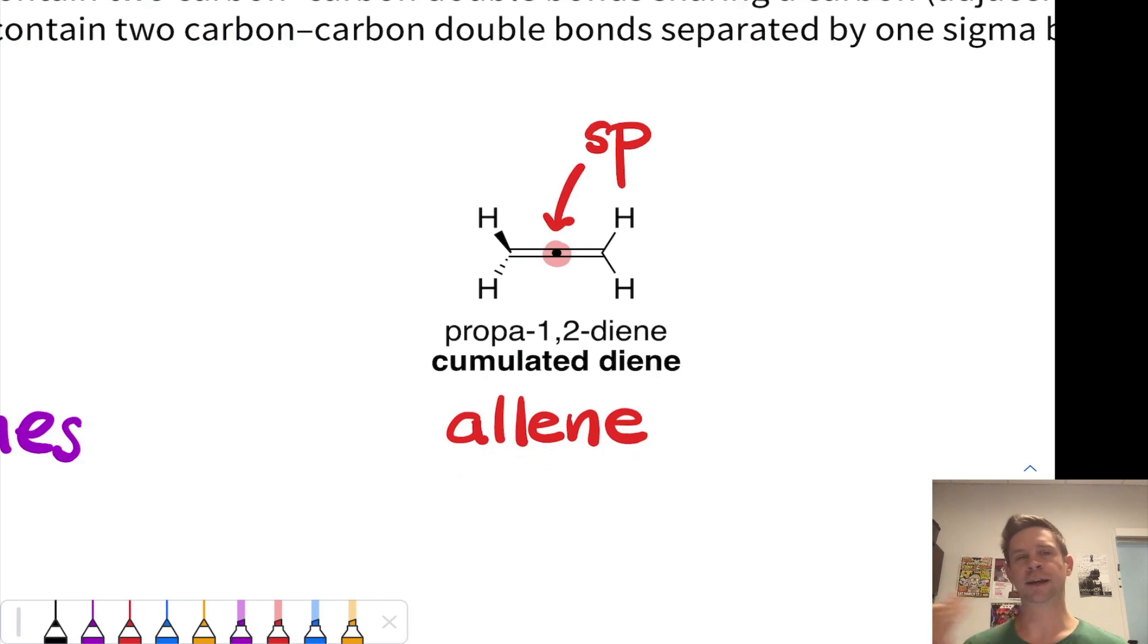Cumulated dienes have some interesting aspects, but they're not really conjugated because these two double bonds are actually at right angles to each other if you look at the pi orbitals associated with those two double bonds.